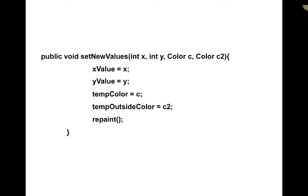Here's another example. This one takes four parameters: an int, an int, and two Color objects — Color c and Color c2. It does some things with those colors and with those x and y values, and then it repaints. This is an example of a method that calls another method. The return type is void, so we're not sending anything back to the place where this method was originally called.